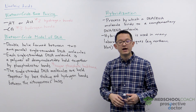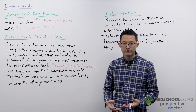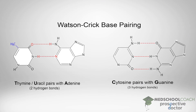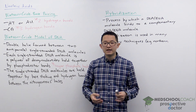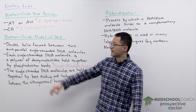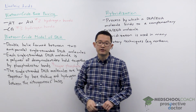Base pairing refers to the interactions between the nitrogenous bases, and as you can see in this diagram there are several possible combinations: adenine with thymine, adenine with uracil, and cytosine with guanine. The base pairs with adenine and thymine or adenine and uracil involve only two hydrogen bonds, whereas the base pair between cytosine and guanine has three hydrogen bonds. This means a CG base pair is held together more strongly than an AT or AU base pair.